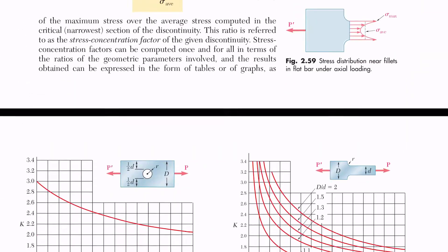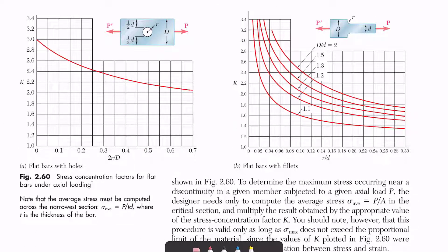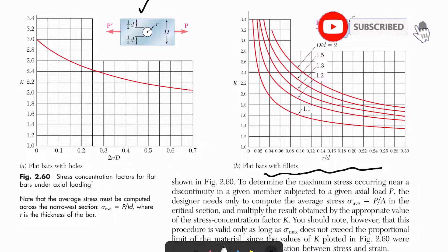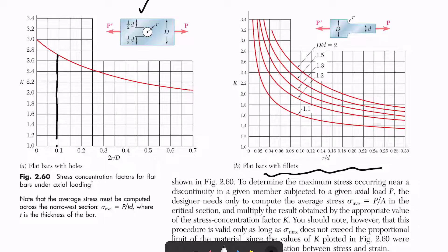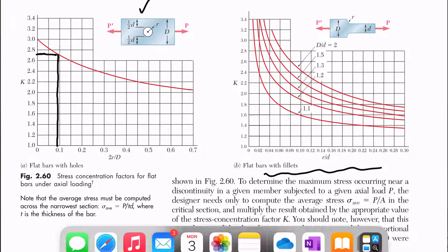From figure 2.6b, using the hole curve, 2r over D equals approximately 0.093, which is close to 0.1. Projecting vertically and then horizontally on the chart, K comes out to approximately 2.72.